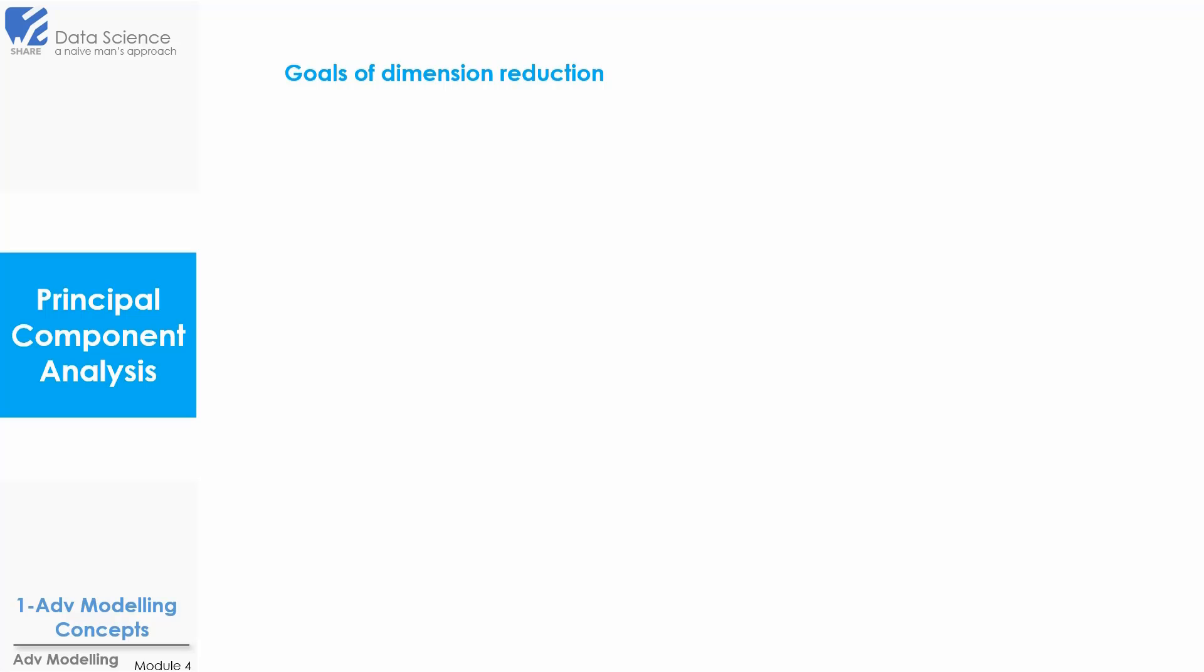So moving forward now, let's see what are the goals of dimension reduction. Basically we achieve three goals via PCA. The first goal is by reducing dimension, it becomes computationally effective. The second goal is it prevents overfitting. And the third goal is it reduces multicollinearity as PCs are independent of each other. So these are the three goals that are achieved through principal component analysis.